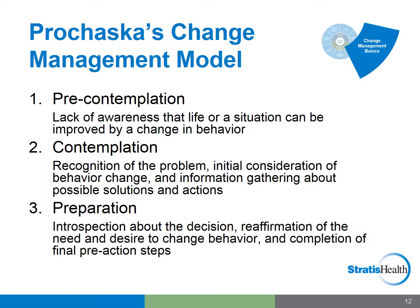James Prochaska introduced the trans-theoretical model of behavior change in 1983, which is comprised of six stages and is used in motivational interviewing by clinicians helping patients take self-directed action and do goal setting. As you listen to these six steps, think about a workplace situation that required you to change and how you would describe your own transition through each step. The first three stages: 1. Pre-contemplation — lack of awareness that life or a situation can be improved by a change in behavior. 2. Contemplation — recognition of the problem, initial consideration of behavior change, and information gathering about possible solutions. 3. Preparation — introspection about the decision, reaffirmation of the need and desire to change behavior, and completion of the final pre-action steps.